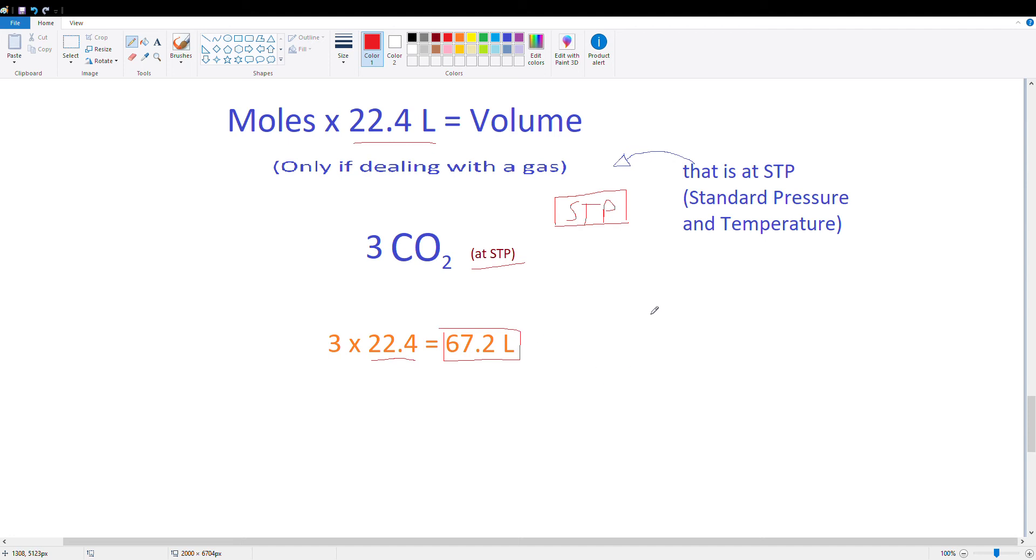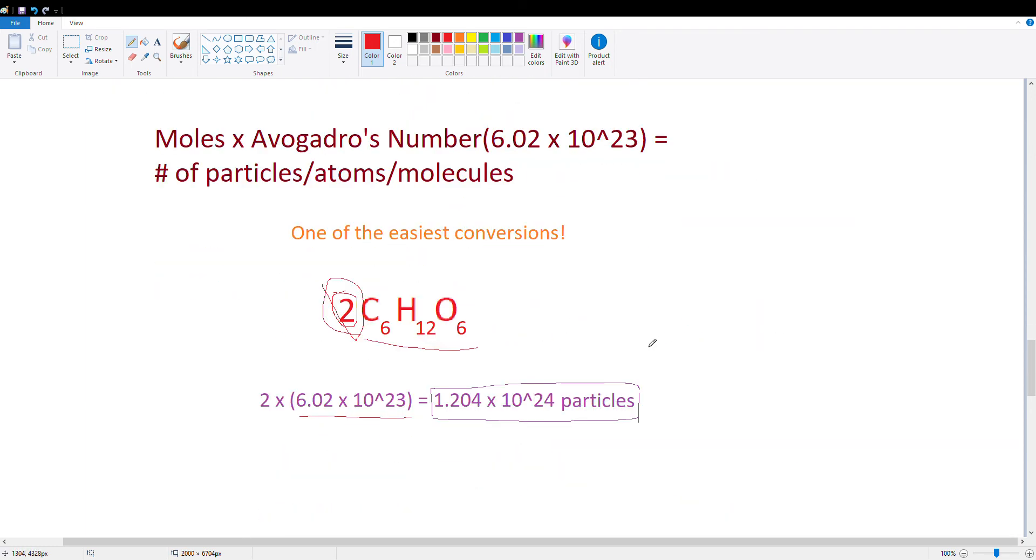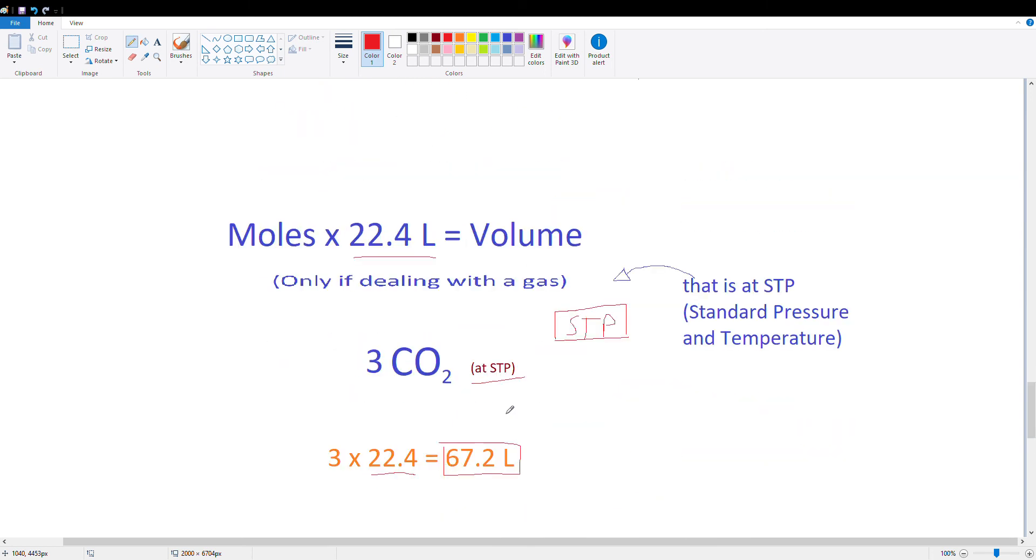You can always go backwards as well. If you're given the volume, you can just divide by 22.4 to get the moles. Same thing up here. If you're given the particles, you can divide by Avogadro's number to get the moles. It's just simple algebra over there.